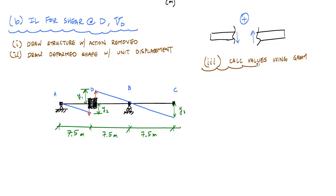You could always just apply a unit force at the location. So I could apply a unit force at C and then calculate by statics the internal shear force at D. And that would give me the value of the influence line right here at this point. But I can do this by geometry as well.